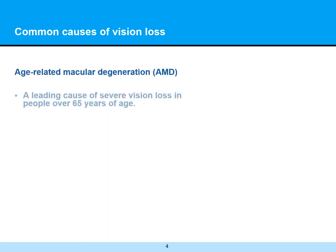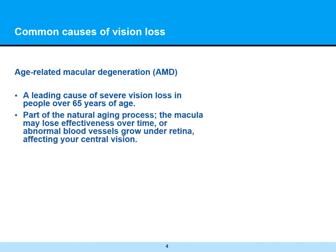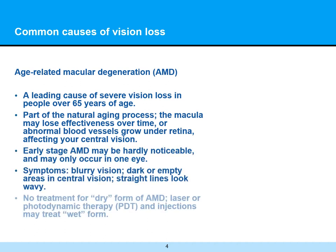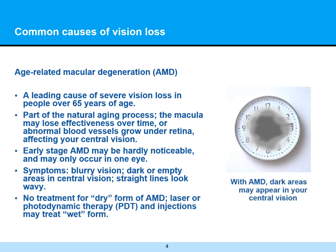With regards to age-related macular degeneration, this is a leading cause of vision loss in people over 65 years of age. It's part of the natural aging process. The macula, which is a specific part of your retina involved in central vision, may lose some of its effectiveness over time, or abnormal blood vessels can grow under the retina affecting the central vision. In early-stage AMD, symptoms can be hardly noticeable and may only occur in one eye. Symptoms can include blurry vision, dark or empty areas of central vision, and straight lines that look wavy.